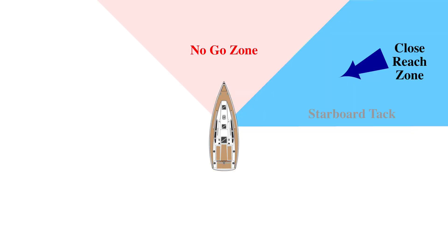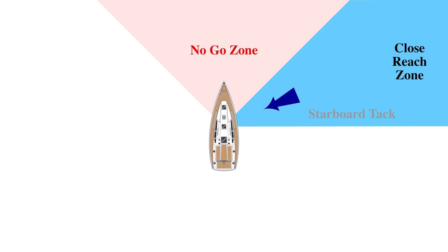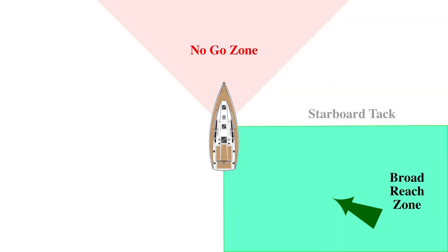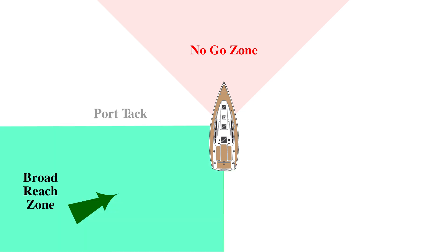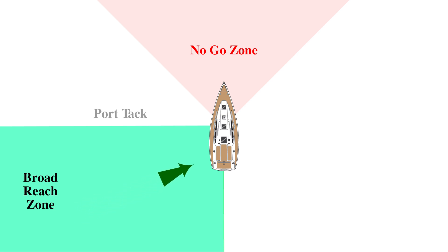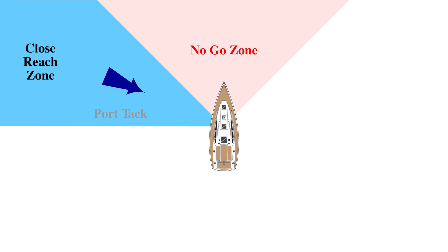In between close-hauled and beam reach is a zone that is referred to as a close reach, and the zone between a beam reach and a run is called a broad reach, and the same for the other side. Between run and beam reach is a broad reach, and between beam reach and close-hauled is the close reach.